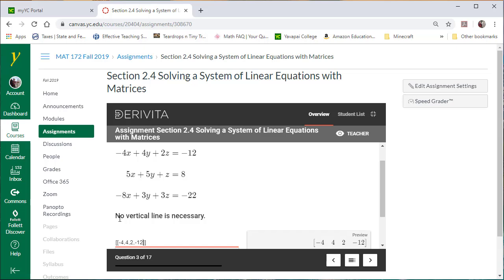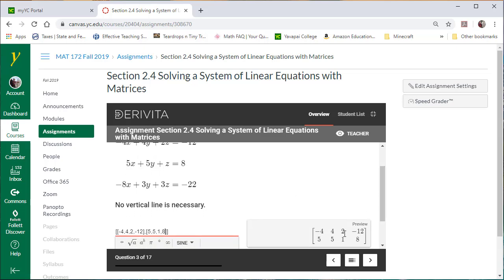To put in the second row, I need to move to the right using my arrow key, type a comma, and then put in another bracket. The first row is in a set of brackets and then the second row needs to be in a set of brackets. So five comma five comma one comma eight. If I scroll down here a little bit you can see it's put in the second row there.